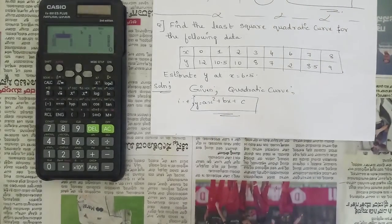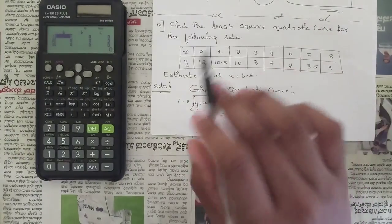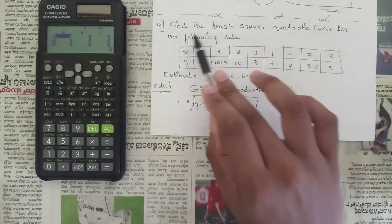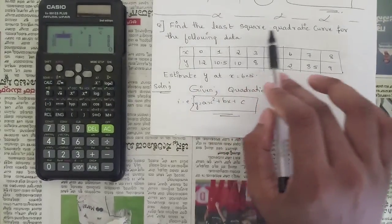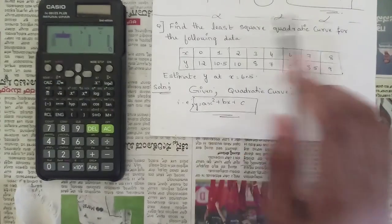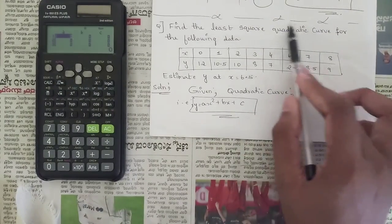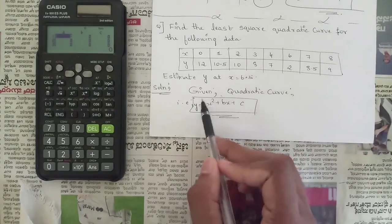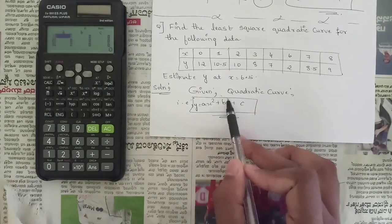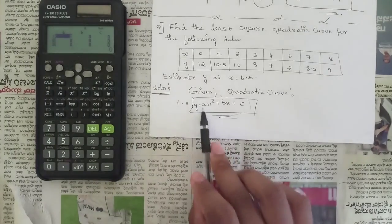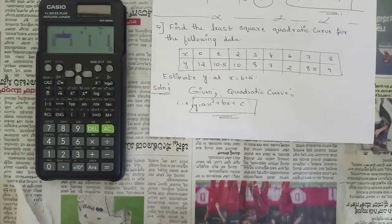In this question, they have not mentioned which curve to take, but they have mentioned that we need to find the least square quadratic curve for the following data. When you see the keyword 'quadratic,' remember that the equation is of the form ax² + bx + c — you cannot take it as a + bx + cx².